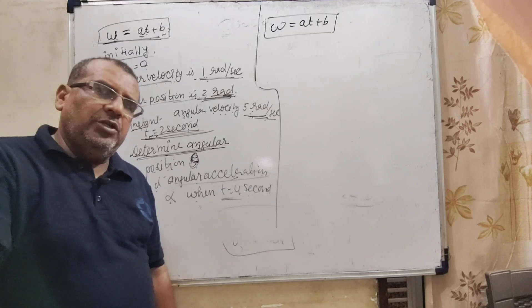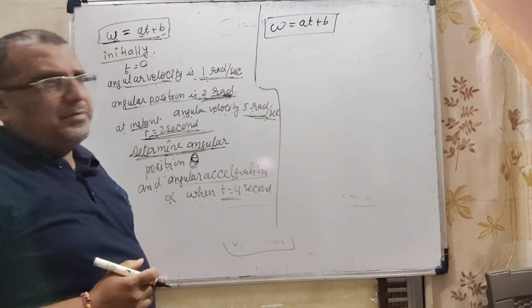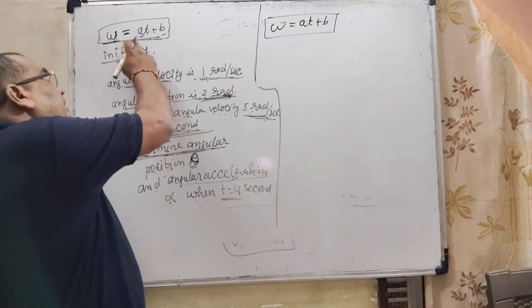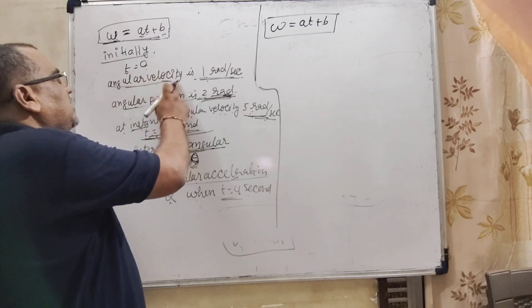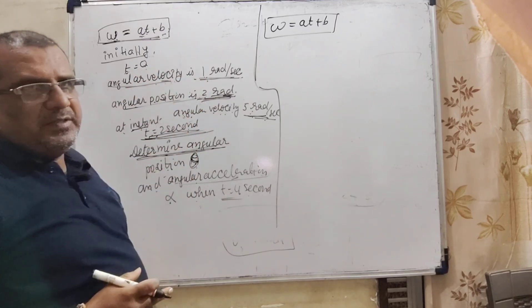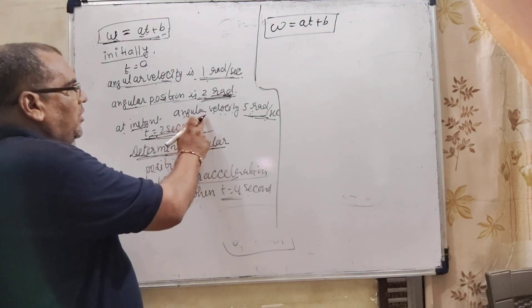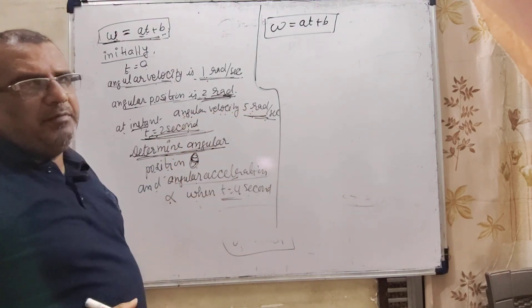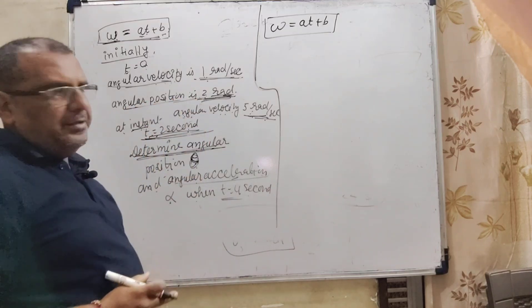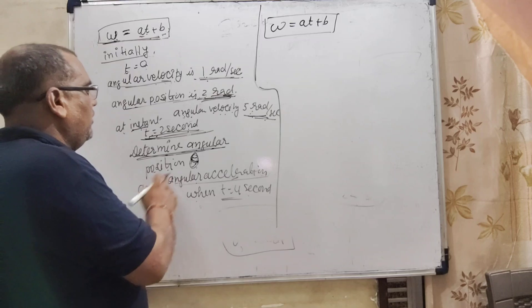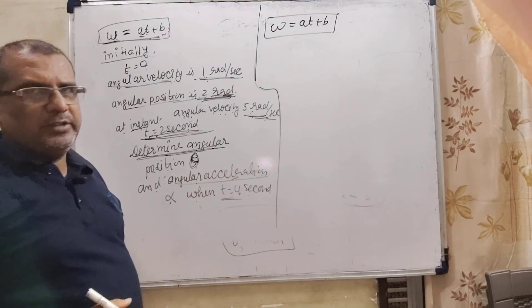Let's see what the question says. Here we have given omega equal to a t plus b. Here omega is angular velocity, a and b are constants, and t is time. Initially at t equal to 0, angular velocity is given 1 radian per second. And at t equal to 2 seconds, angular velocity is 5 radian per second. Here, initial angular position is given 2 radian. And we have to calculate angular position and angular acceleration alpha when t equal to 4 seconds.